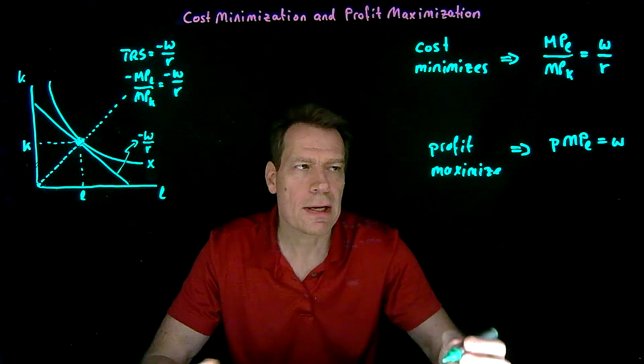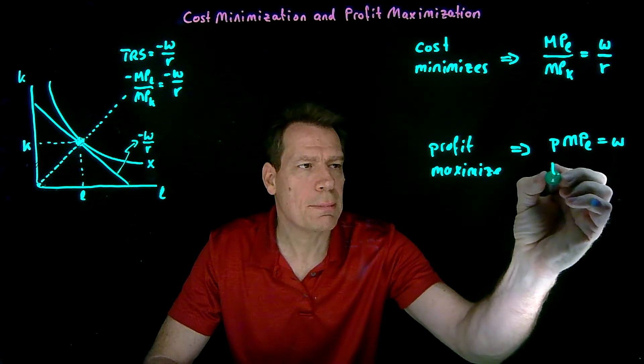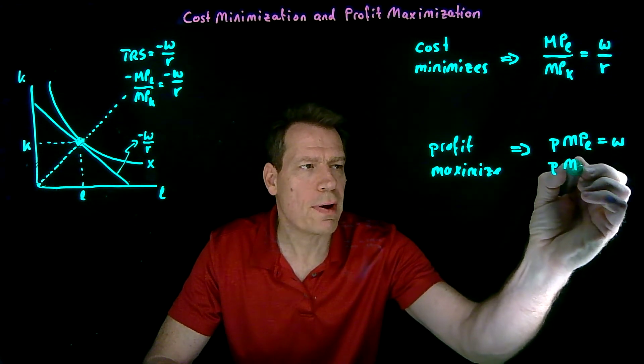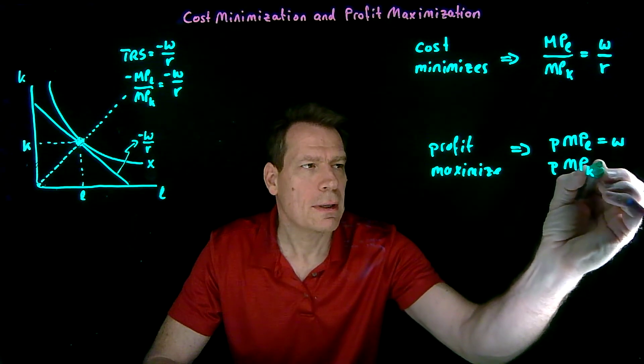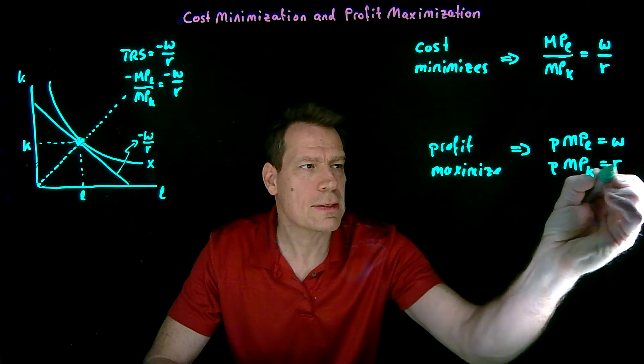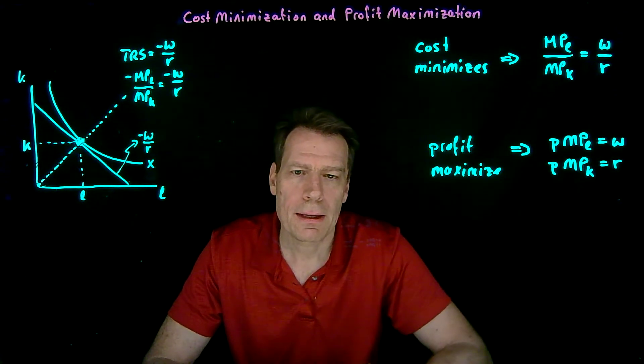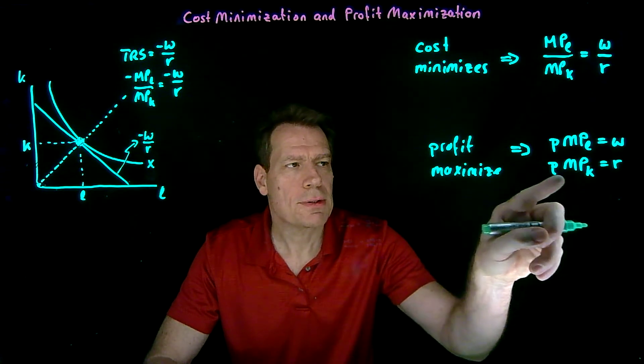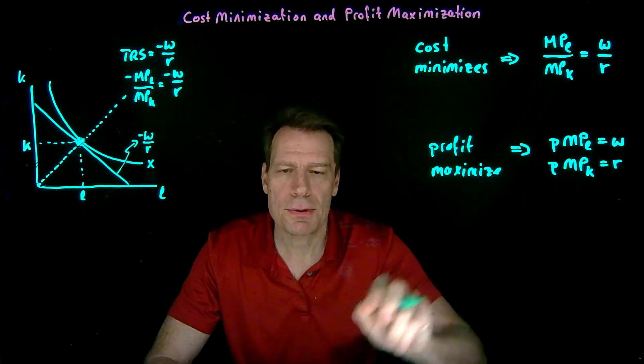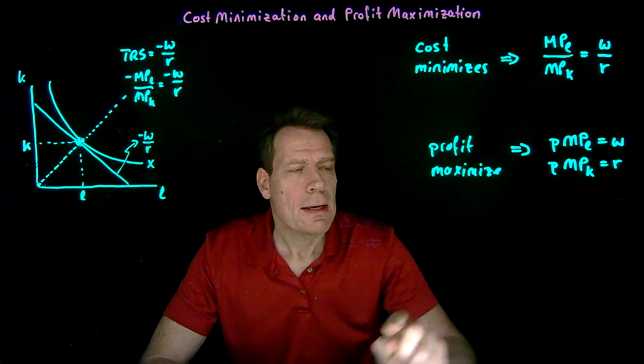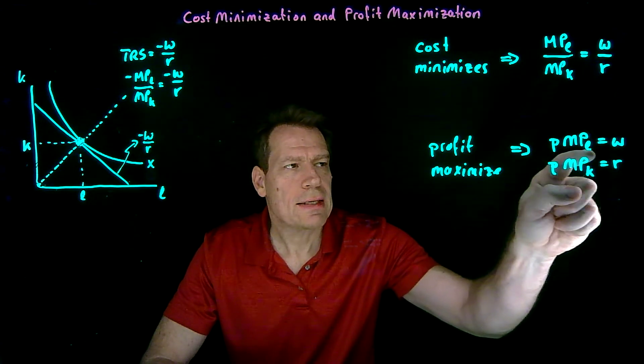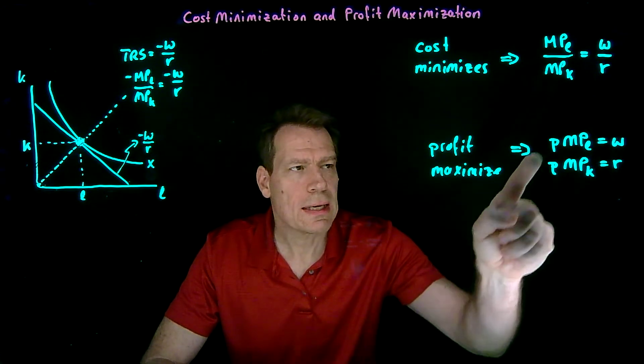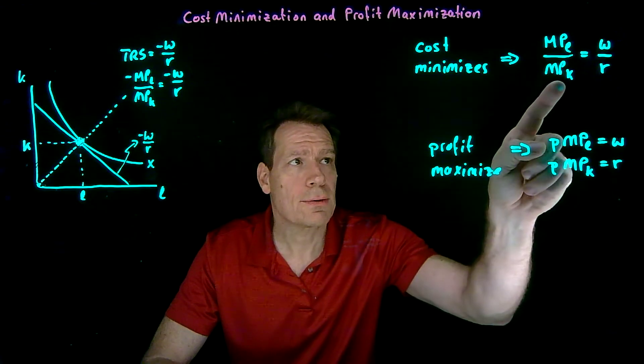And similarly, if they can vary capital, they're going to hire capital so long as the marginal revenue product of capital is greater than the rental rate and stop when it's equal. So profit maximization implies that these conditions hold. Now notice that when we divide these two equations by each other, we can cancel the price and get to this equation.